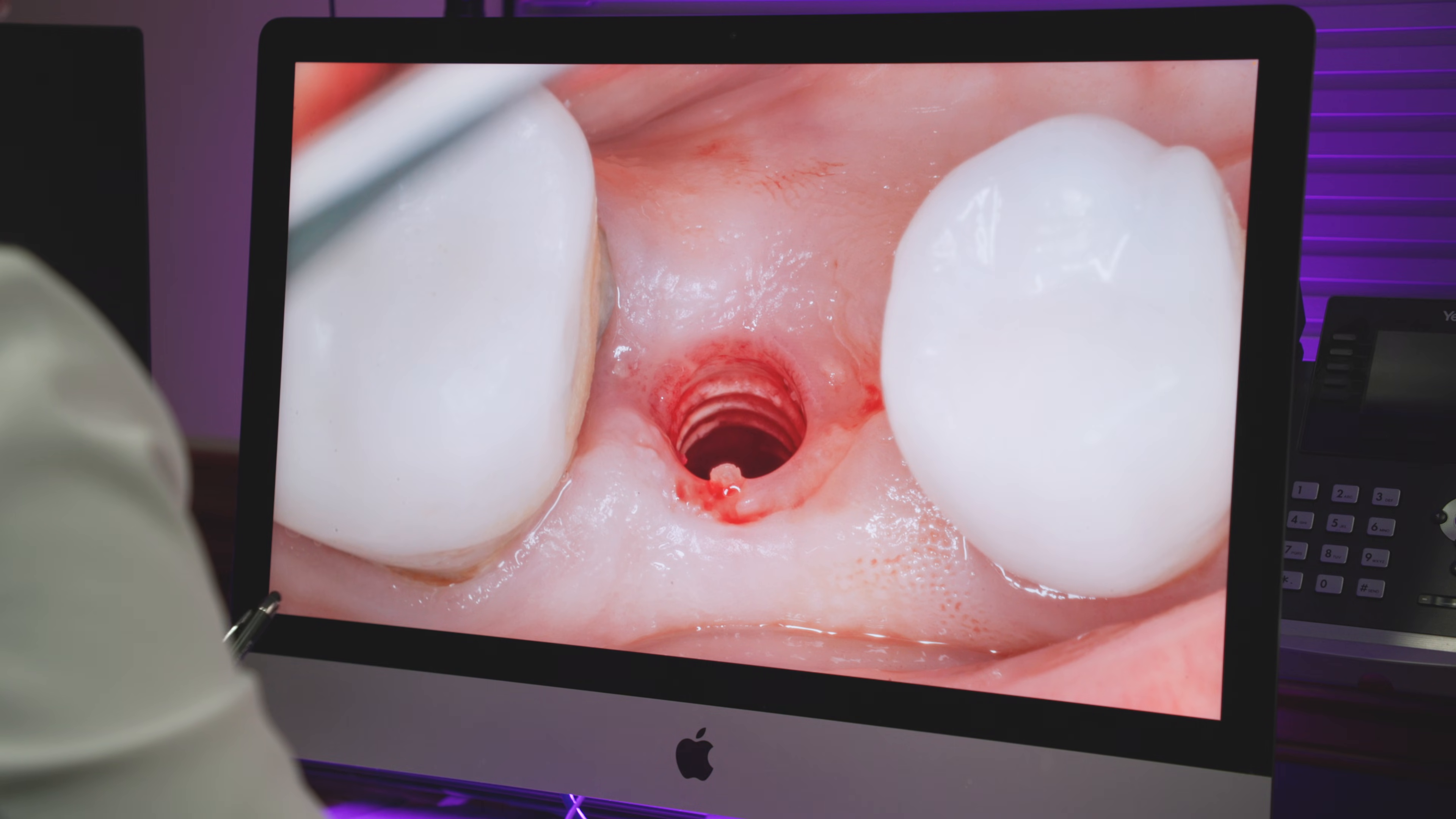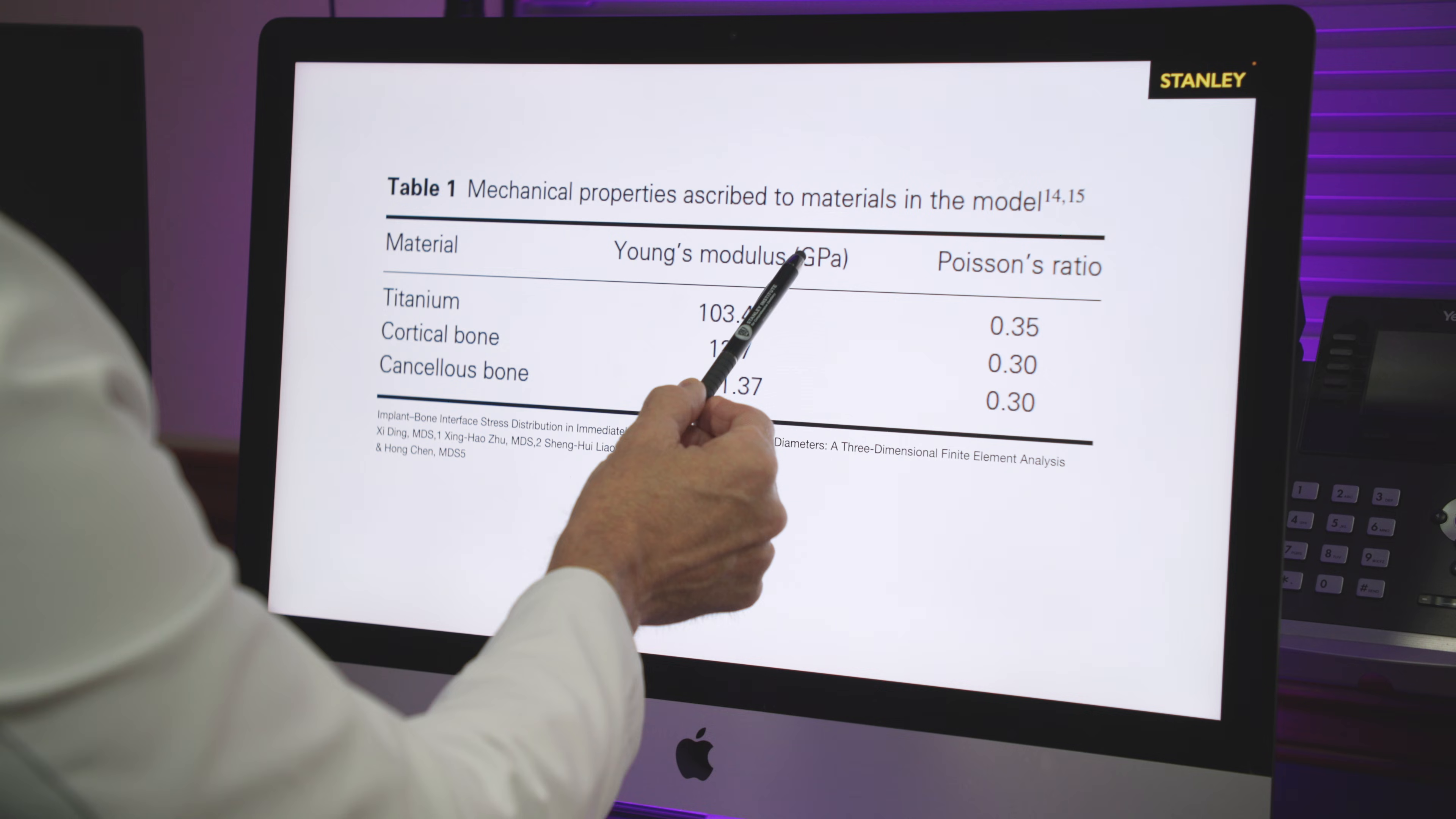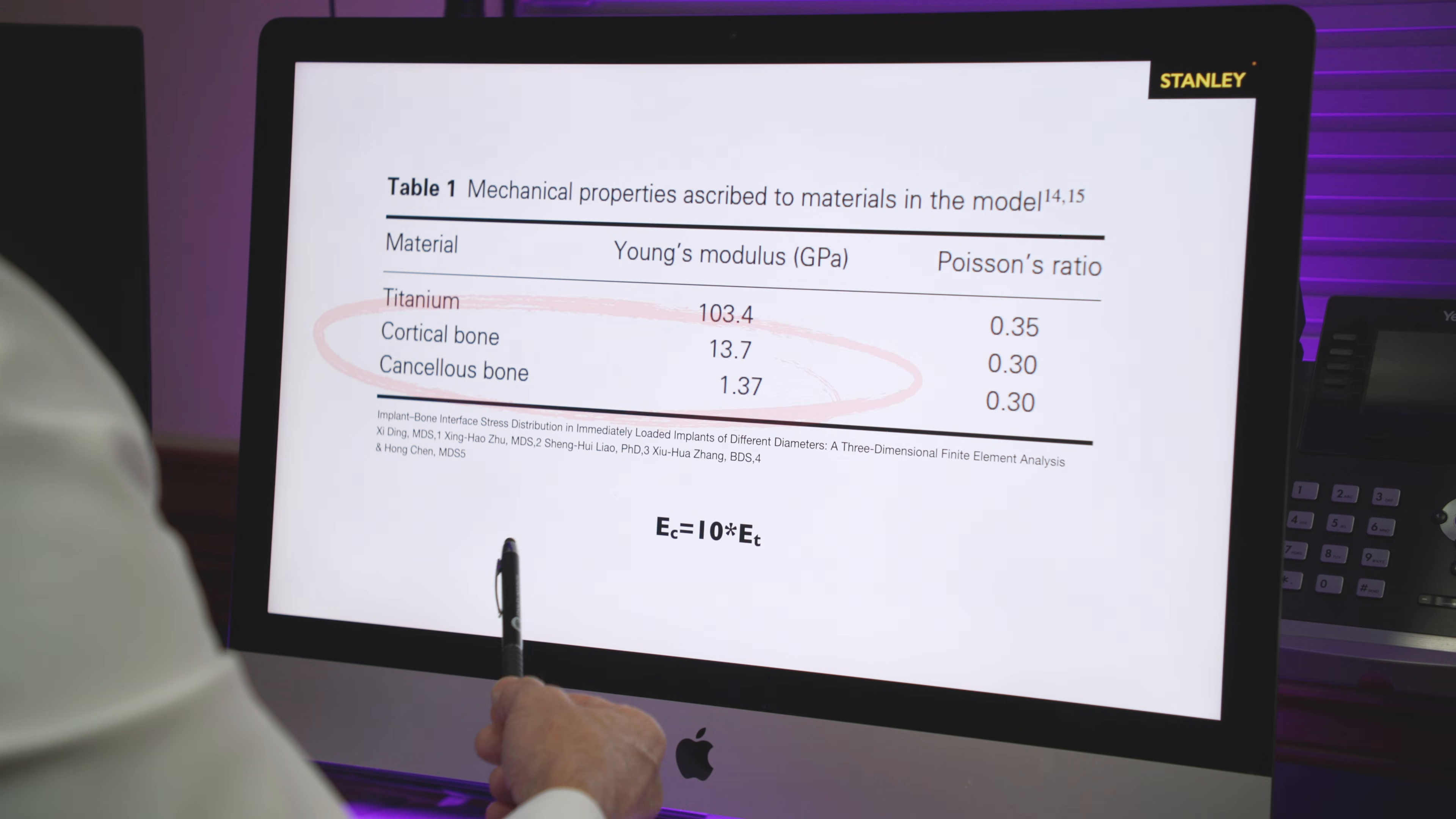Torque is not a great measurement of primary stability, but what about engaging cortical bone? So if we look at the cortical bone in the literature, it says cortical bone is about a 13.7 Young's modulus and trabecular bone is a 1.37. What that means is that the stiffness of the cortical bone is about 10 times that of the trabecular bone. Okay, we kind of know that. The stiffness of cortical bone, cortical bone is more stiff than trabecular bone. Well, how does that play out?